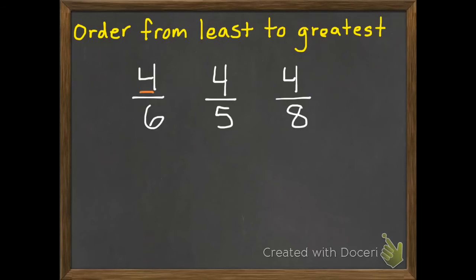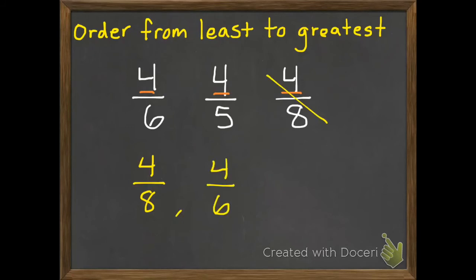Because those are going to be small. So 4 eighths is going to be the least — if we only have 4 out of 8 pieces, that's not very much, because those pieces are smaller than fifths or sixths. Next would be 4 sixths, because those pieces are a little bit larger than eighths. And then obviously 4 fifths — with 4 fifths we have almost all of the pieces, we're only missing one. So that one's going to be the greatest.